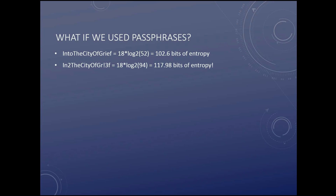If I wanted to fancy it up, I could change 'in' to the number 2, and change the 'i' in 'city' to an exclamation mark. Even though I only used two numbers and one special symbol, I still have to add the entire character sets into the formula. So it's still 18 characters long, but now I'm drawing from up to 94 characters — that pushes it to almost 118 bits of entropy.